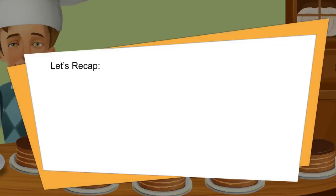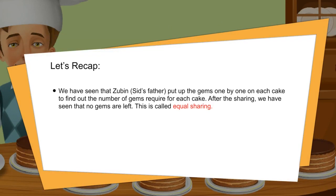Let's recap. We have seen that Zubin, Sid's father, put up the jams one by one on each cake to find out the number of jams required for each cake. After the sharing, we have seen that no jams are left. This is called equal sharing. Thank you.